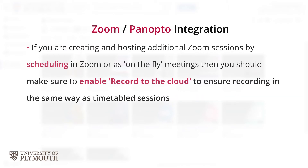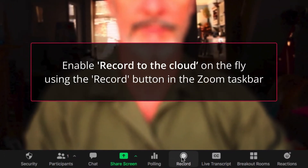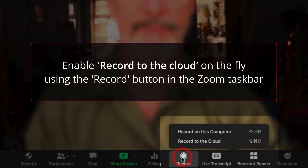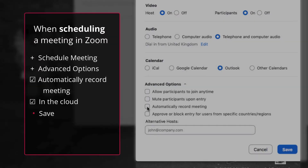If you as host are creating your own Zoom meetings in addition to timetabled sessions, either by scheduling or on the fly, then you should make sure to manually select Record to the Cloud in Zoom to enable automatic Panopto upload in the same way as the timetabled sessions.